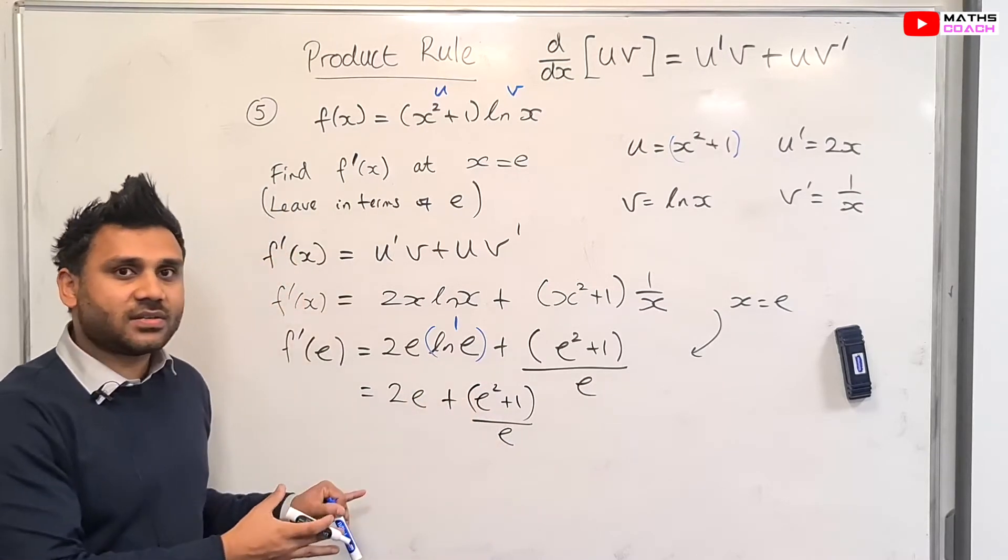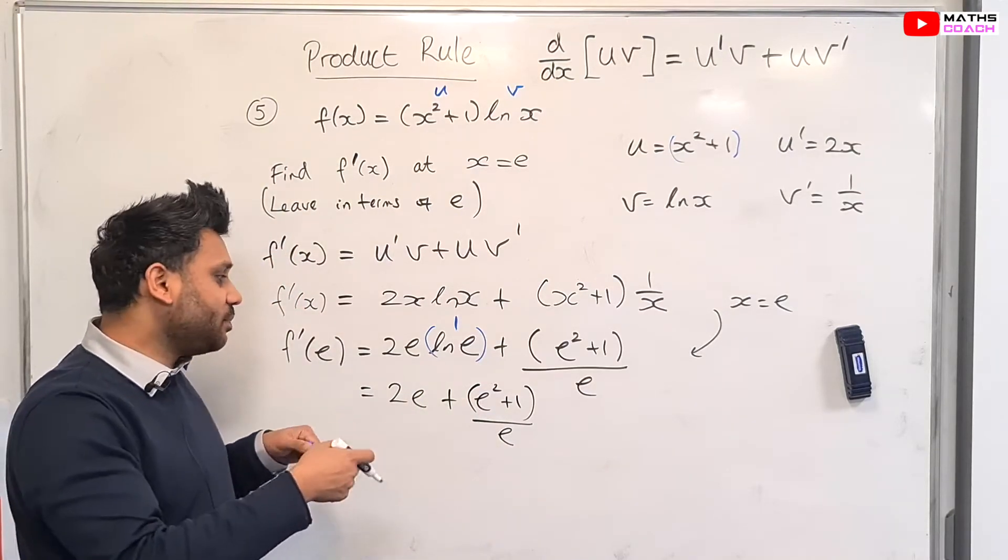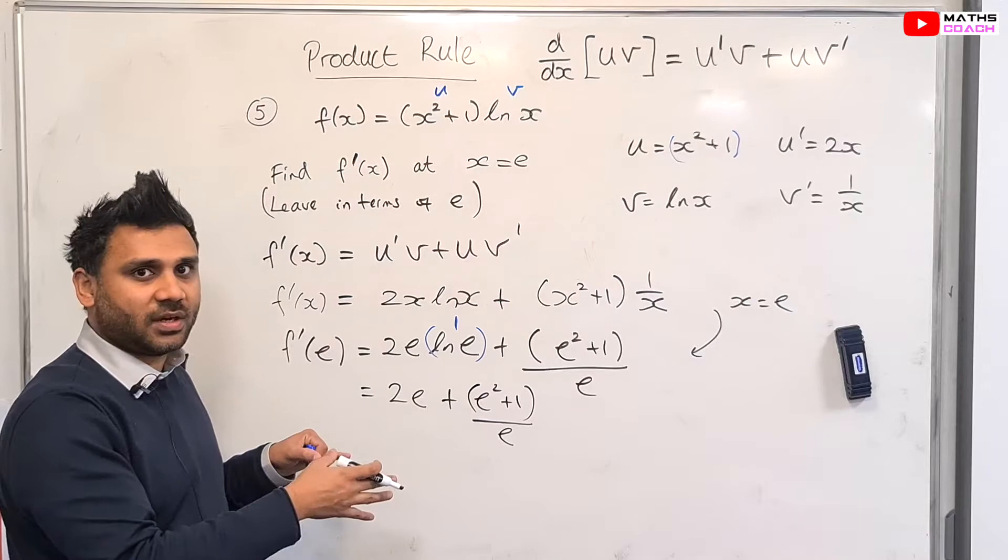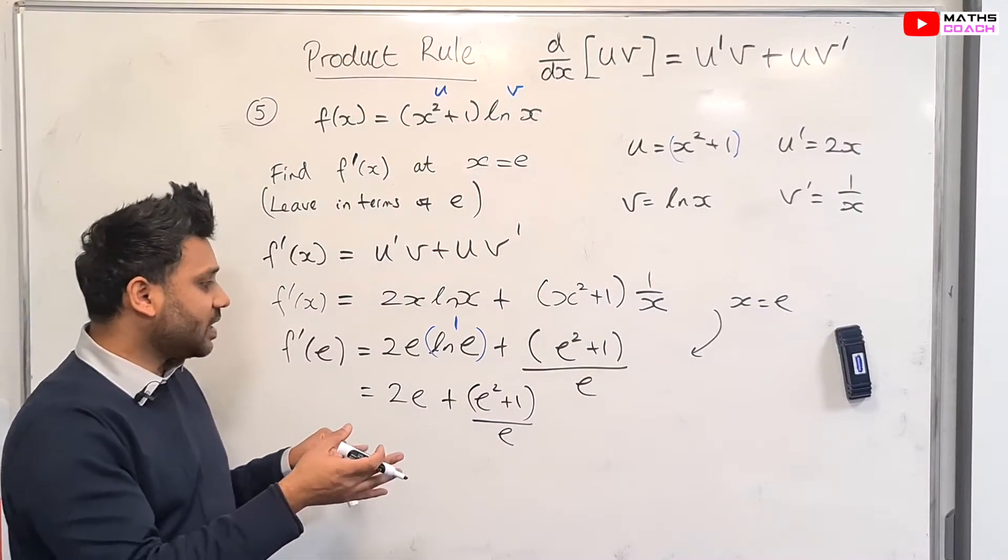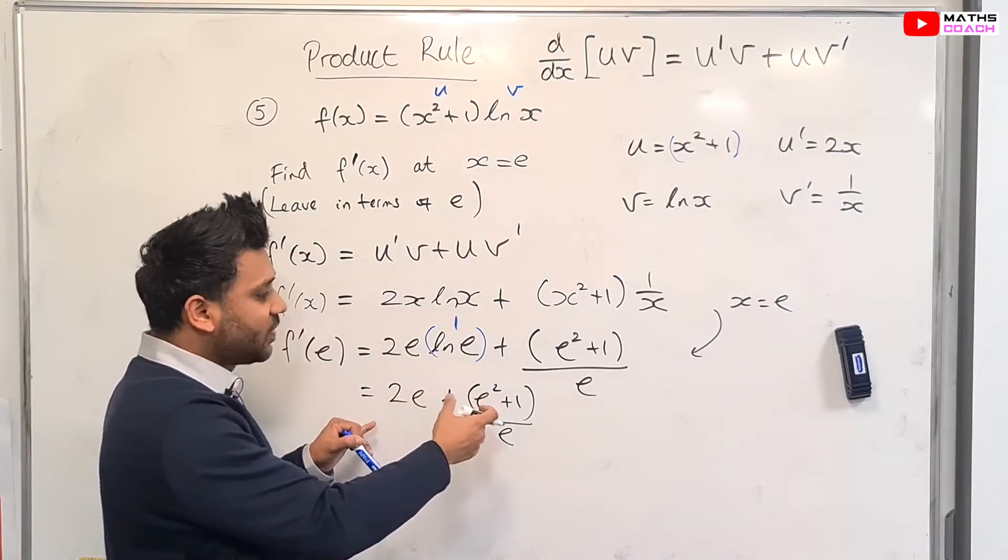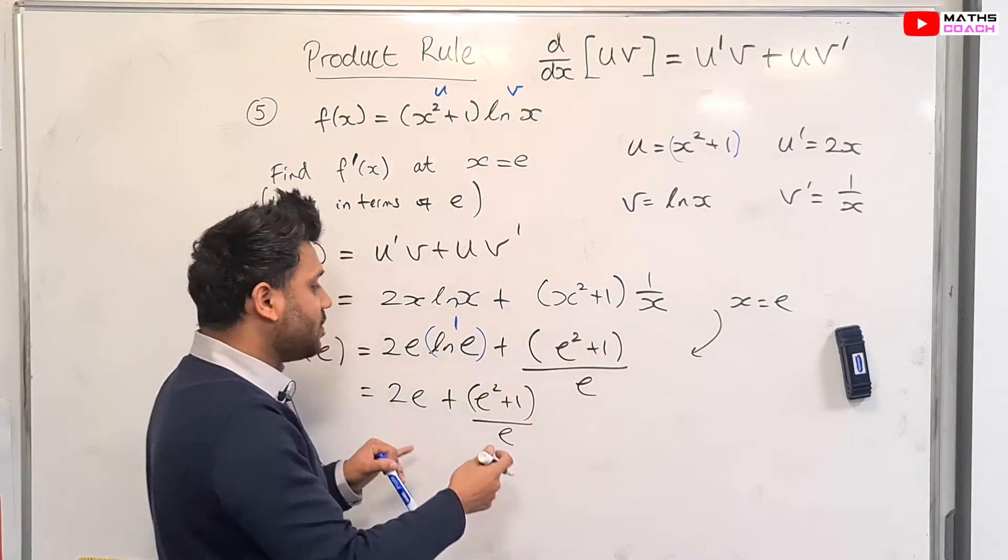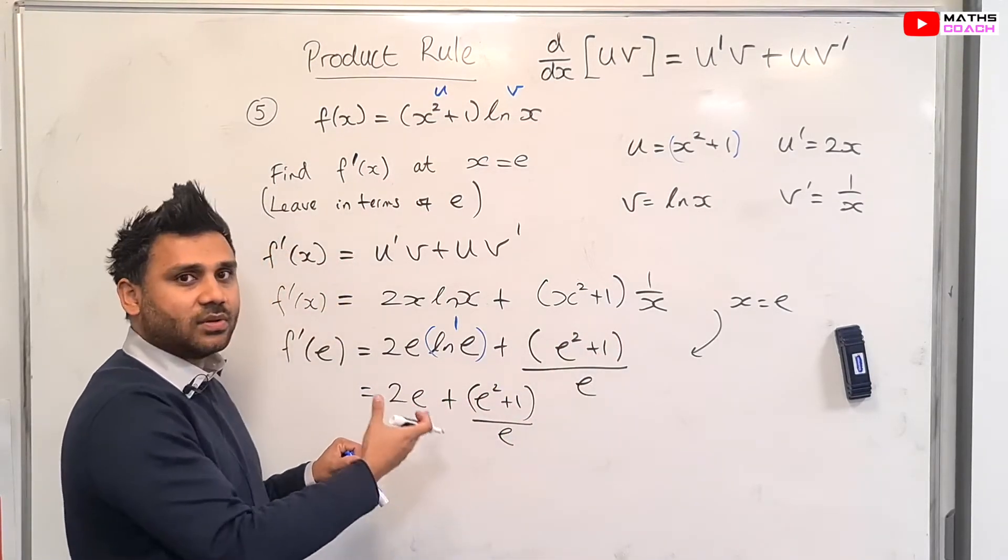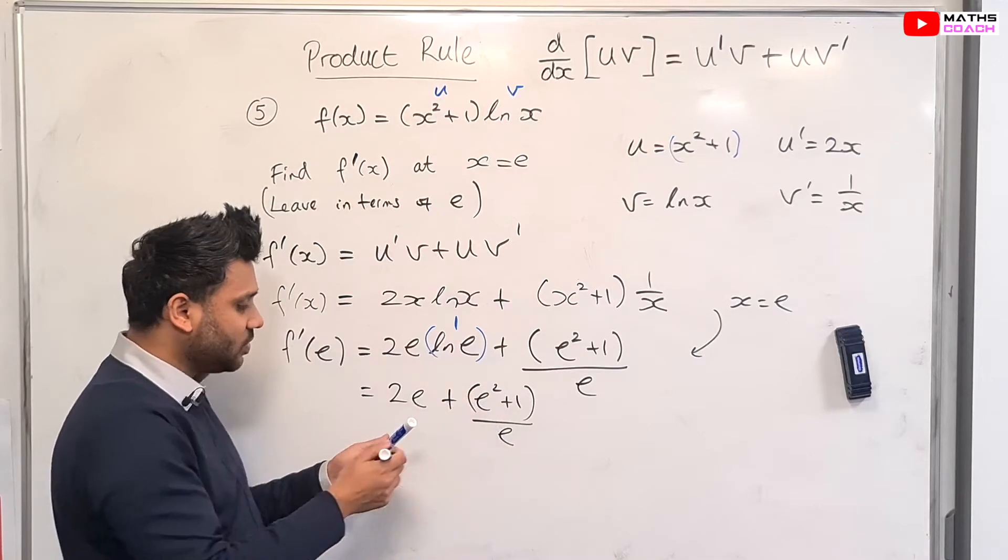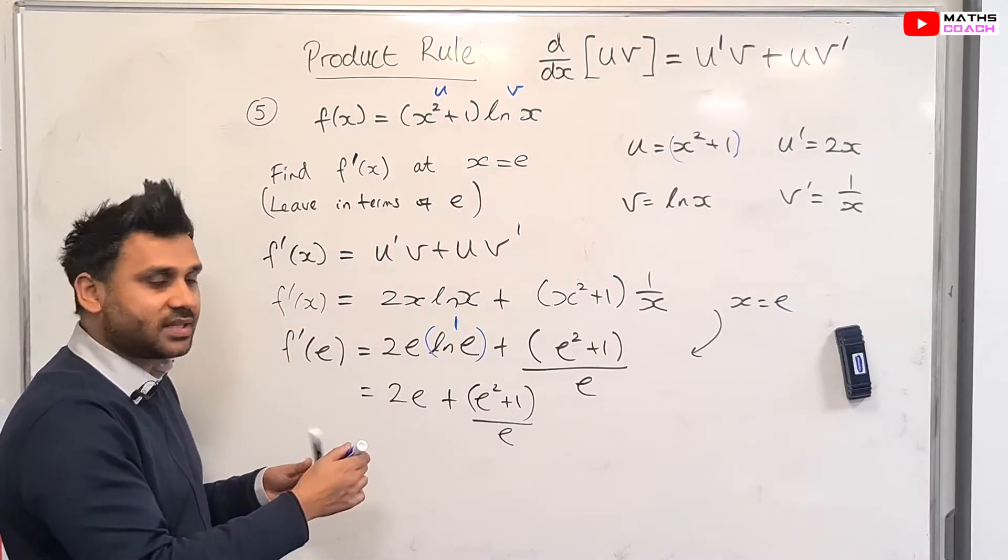We do have the answer in terms of e, but I want to do a bit extra here. I want to tidy this expression up. In other types of exam questions, they will ask you to either give the answer in a special form, or you might say write this as a single fraction. So here we have two terms. We want to write it as a single term.